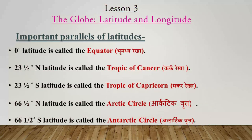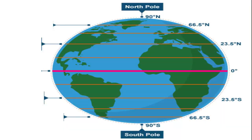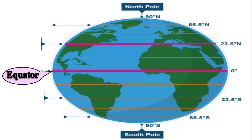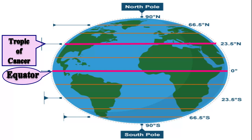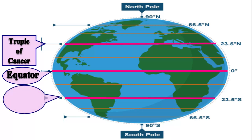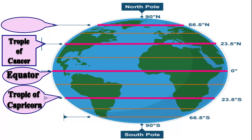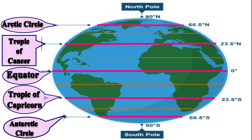Let us look at the important parallels of latitude. Zero degree latitude is called the equator. Twenty-three and a half degree north latitude is called the Tropic of Cancer. Twenty-three and a half degree south latitude is called the Tropic of Capricorn. Sixty-six and a half degree south latitude is called the Antarctic Circle.